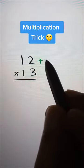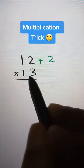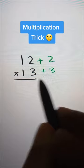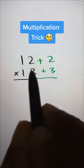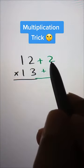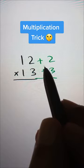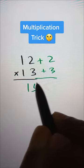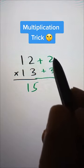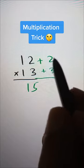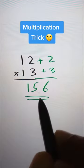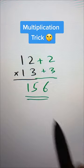12 is 2 more than 10, so plus 2, and 13 is 3 more than 10, so plus 3. The first step is 12 plus 3, or 13 plus 2 — it will give you the same answer: 15, whichever is easier for you. The second step is 2 times 3, that is 6. So our final answer: 12 times 13 is 156.